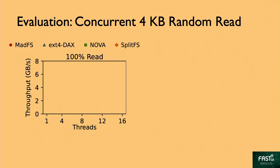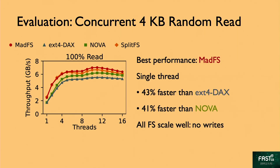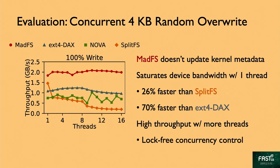To answer the first question, we perform concurrent 4KB random reads on a single file. In the figure, the x-axis shows the number of threads and the y-axis shows throughput in gigabytes per second. MetaFS has the best overall performance. With a single thread, MetaFS is 47% faster than ext4dax and 41% faster than Nova. For concurrent random overwrites on a single file, MetaFS does not update any kernel metadata and handles this workload completely in user space. MetaFS saturates the device bandwidth with just a single thread — 26% faster than SplitFS and 70% faster than the underlying kernel file system ext4dax. MetaFS sustains high throughput with more threads thanks to the efficient design of our log-free optimistic concurrency control.